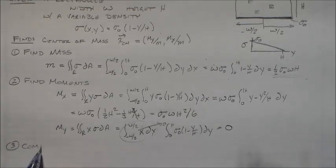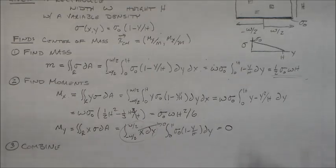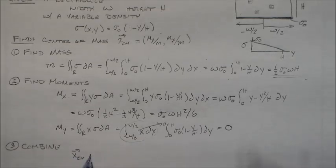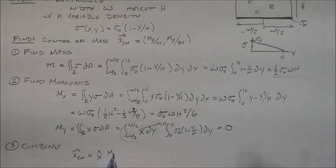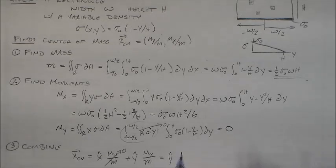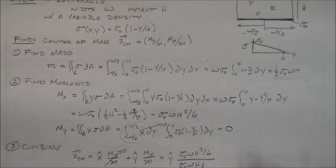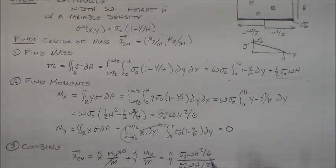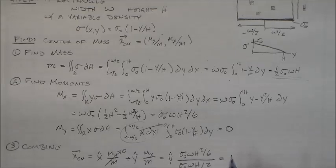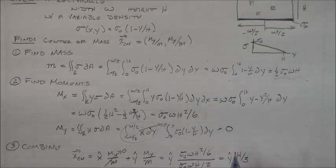And then we combine all this stuff with this equation up here. The center of mass for an x thing in the x direction is My over m, which is zero. Y hat is equal to sigma naught w h squared over six divided by sigma naught w h over two. I'm going to get one-third, right? So I have y hat equals h over three.